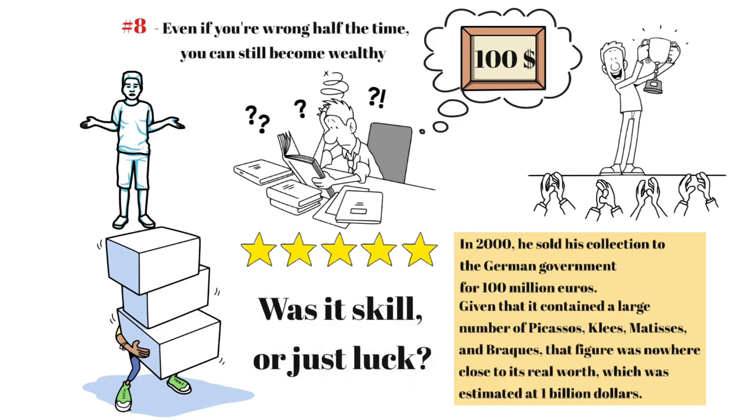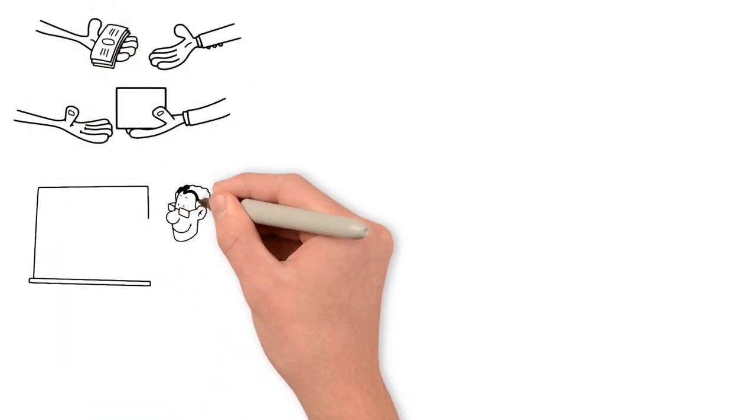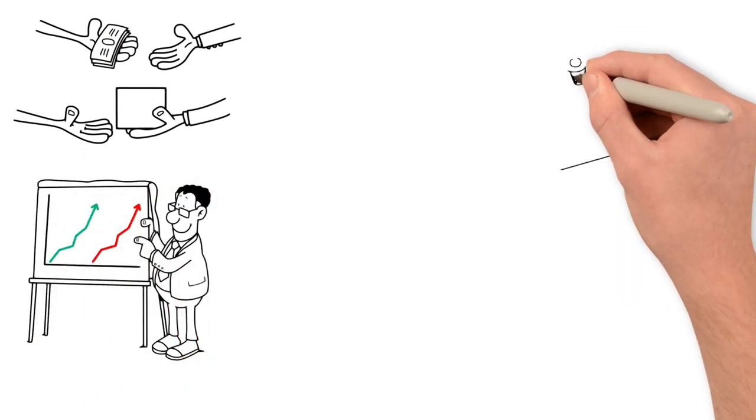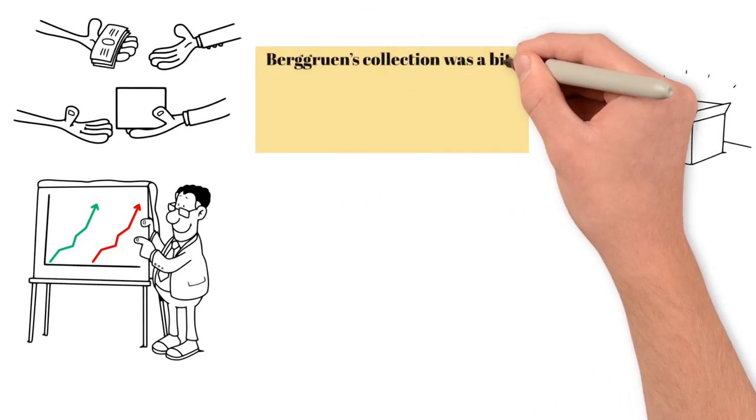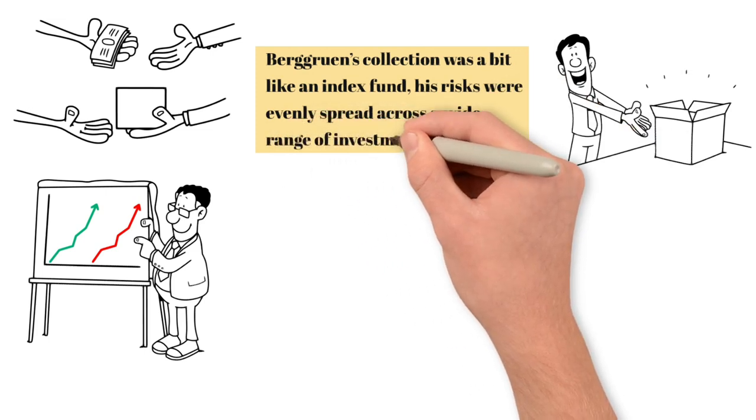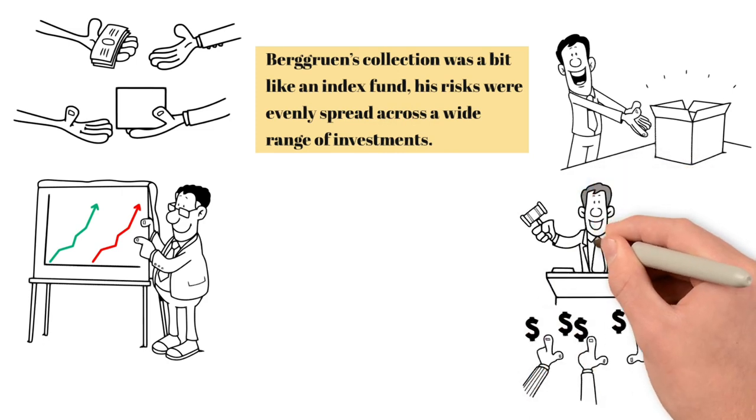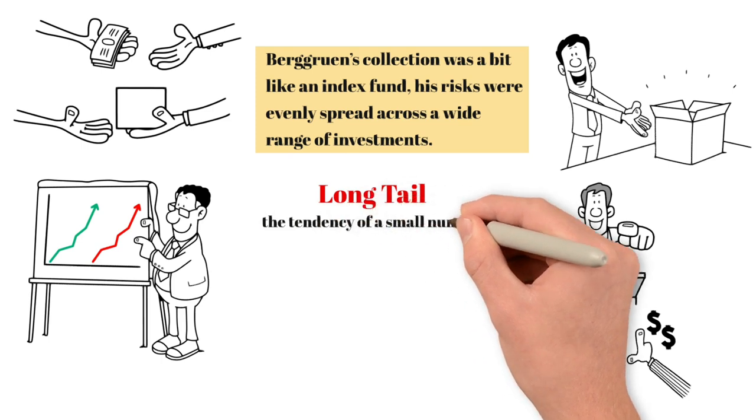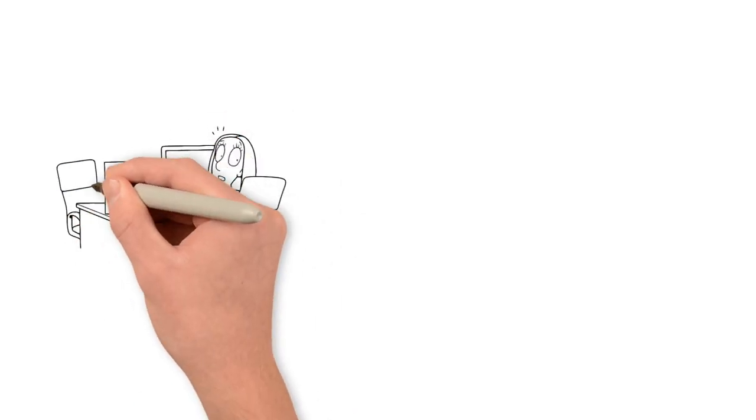According to Horizon Research, successful art collectors have a simple strategy—they buy a lot of art. Some pieces turn out to be great investments if held for a long time, but most are not that valuable. The trick, as Horizon suggests, is to keep the valuable ones until the overall collection's value matches that of the best pieces in the collection. Berggruen's collection was a bit like an index fund. His risks were evenly spread across a wide range of investments. Rather than just buying pieces he happened to like or admire, he bought everything he could get his hands on and waited until a few winners emerged. This strategy applies to all investments. Call it the long tail—the tendency of a small number of events to account for the majority of outcomes. There's a lot of complicated math behind this principle, but it's simple enough when you boil it down to the essentials. In simple terms, if you get some things right, you can handle making mistakes.